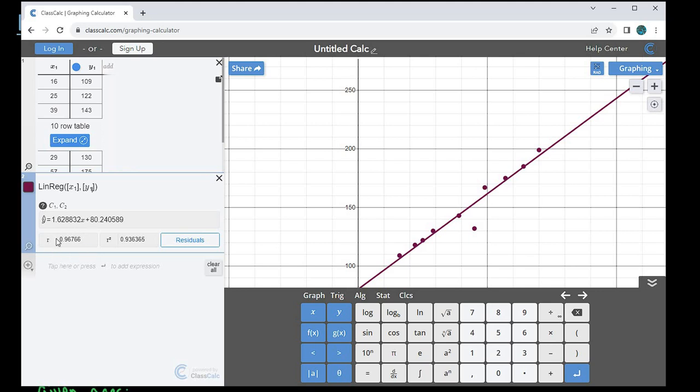With a correlation coefficient, it has to be between negative one and positive one. The closer it is to either one or negative one, the stronger the correlation. For this one, since the correlation is 0.9676, that's very close to one, which means this is a very strong prediction equation. Anything from about 0.8 to 0.99 would be strong. If it's exactly one, that means all the points fall on the line and 100 percent of your data points fall on that line.